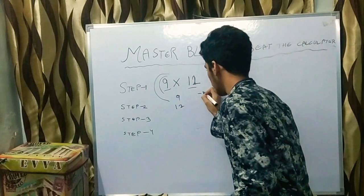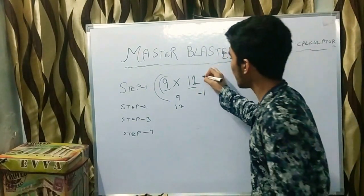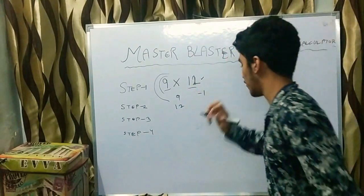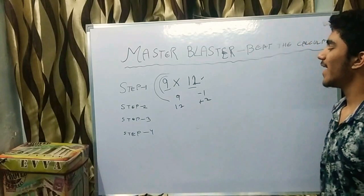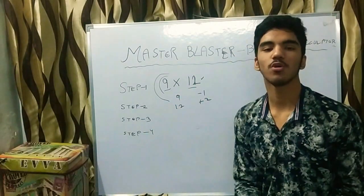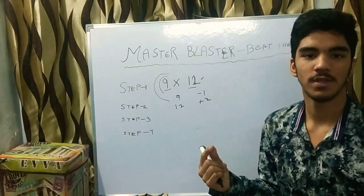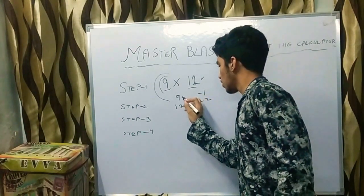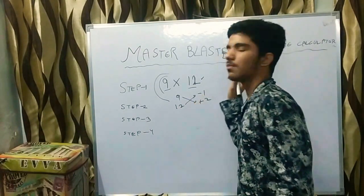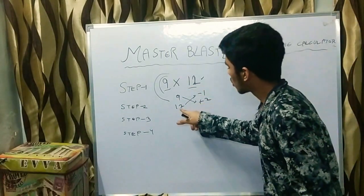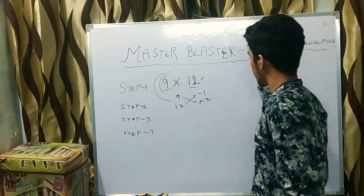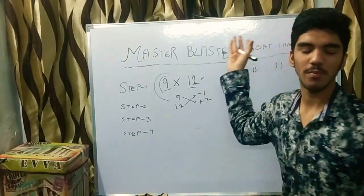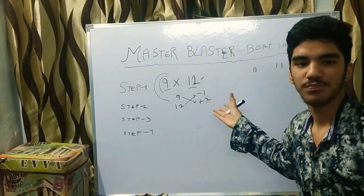You have to subtract 1 from 10 to get 9, so write minus 1. You have to add 2 to 10 to get 12, so write plus 2. In Step 3, to get the first number, cross it — like 12 minus 1 equals 11, and 9 plus 2 also equals 11. Either way gives you 11.